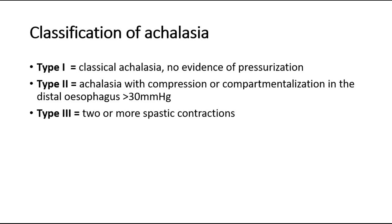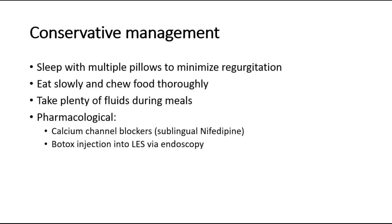Type 1 is classical achalasia with no evidence of pressurization. Type 2 is achalasia with compression or compartmentalization in the distal esophagus more than 30 mmHg. Type 3 is with two or more spastic contractions.